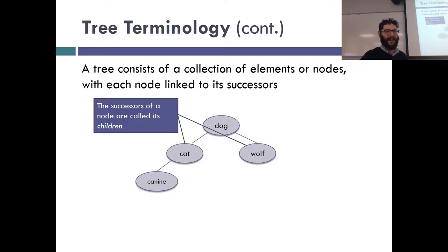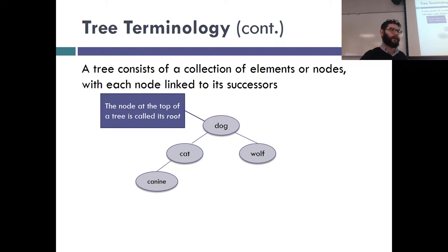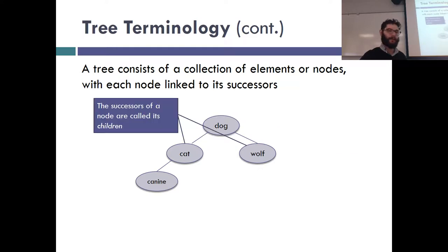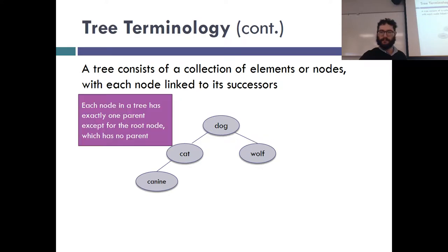'Successor' and 'predecessor' are big words with lots of syllables, so let's use something easier. Dog is the parent of cat and wolf — cat and wolf are the children of dog. So the successors of a node are called the children, and the node above you is called your parent. Every node in the tree has exactly one parent — basically, you have one boss above you.